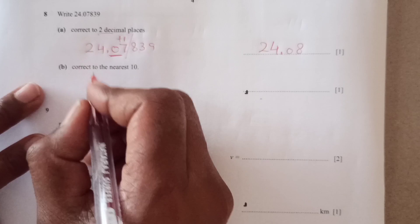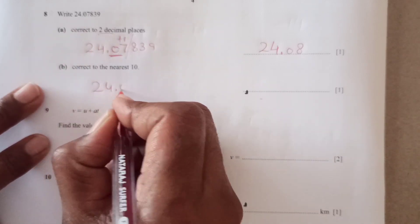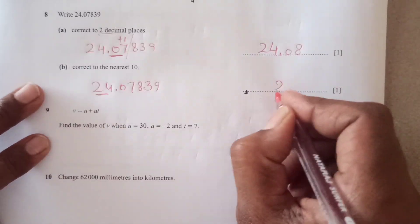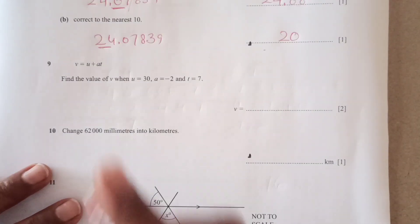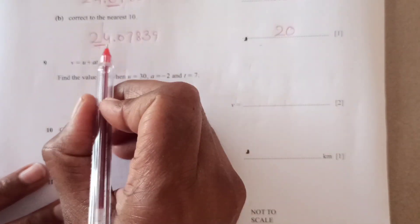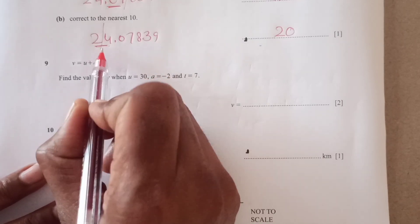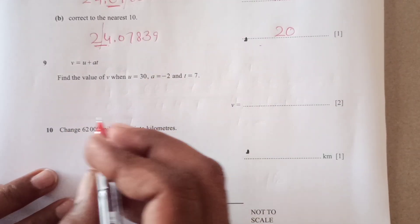Correct to nearest 10. Nearest 10 we are just going to take 24.078. So nearest 10 this is going to be 20. This number is less than 5. So we will make it 0 to the nearest number.